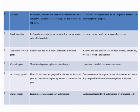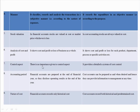In financial accounting, each and every transaction does not provide detailed information to management. But in cost accounting, cost data provides each product and each department's details to management. There is no importance given to the control aspect in financial accounting, whereas cost accounting provides a detailed system of cost control.